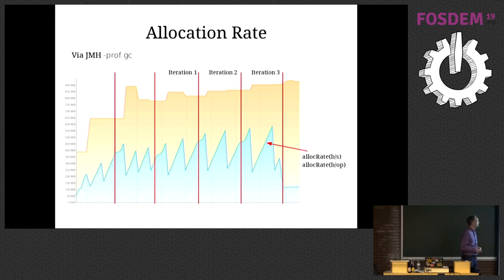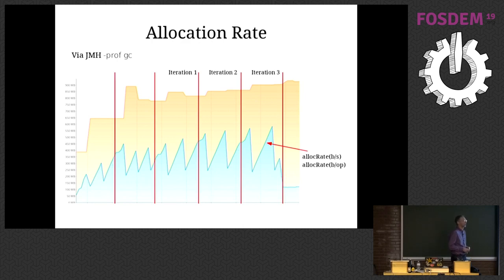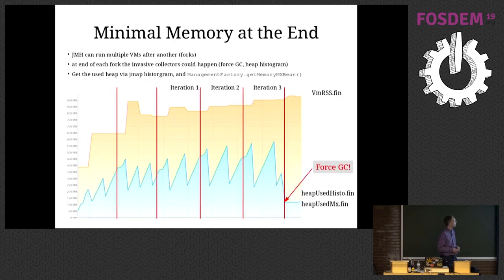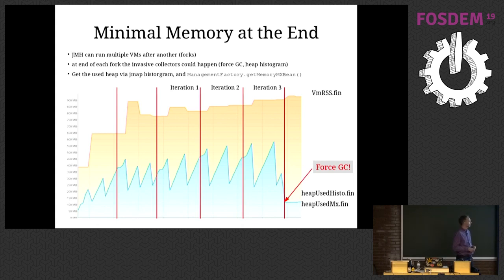A good feature to keep looking at is the allocation rate — the rate at which objects are allocated. This is actually built-in in JMH with the GC profiler. And finally, I decided that when we are finished with our iterations it's safe to do a forced GC and use JMAP to get a heap histogram, and also use the management extensions to get the value of the used heap.